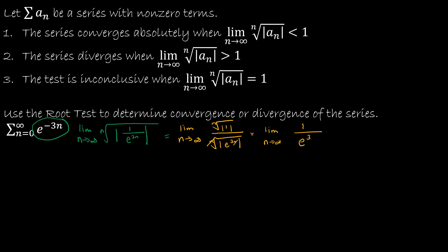So now I have the limit as n approaches infinity of 1 over e to the third, which notice there is no n any longer, so the limit is 1 over e to the third. So now I just have to determine: is that less than 1, greater than 1, or equal to 1? Using a calculator, you can determine that that is less than 1.